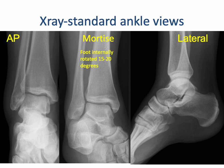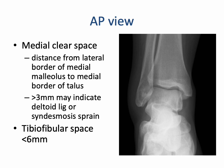The standard ankle views are a frontal or AP, a mortise view which is internal rotation of about 15 to 20 degrees giving a lovely view of the talar dome in profile, and lateral. On frontal projection we can look at the medial clear space, which is the distance from the medial border of the talus to the lateral border of the medial malleolus, usually less than or equal to 3 mm, and the tibio-fibular space, usually less than 6 mm.